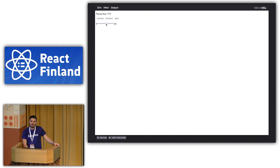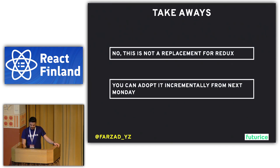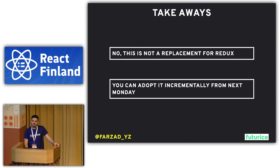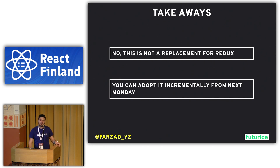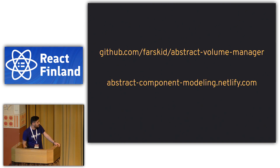The Elm demo uses the same representation but everything was implemented with the same mindset. As takeaways: this is not a replacement for Redux — you think about behavior and modeling before you even decide whether to use Redux. You can adopt this from next Monday without rewriting from scratch — use it for new features or refactoring. It's especially valuable for diverse tech teams like Android, iOS, and web, who can start from the behavior and visualization level. The code is on github.com/farscale/abstract-volume-manager and slides at abstract-component-modeling.netlify.com.